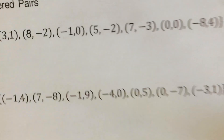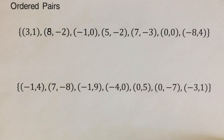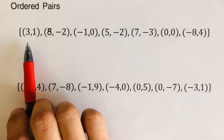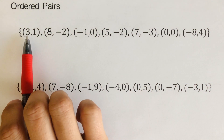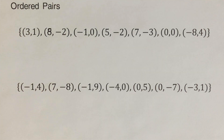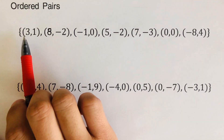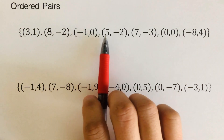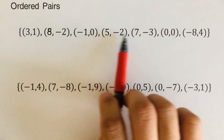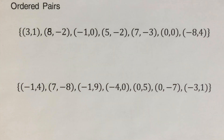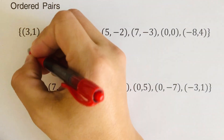Now let's look at ordered pairs. I'll take the first one as an example. To determine if this is a function, we look at the x values. Remember, for every x there should only be one unique y value. Let's see if x is repeated and paired up differently. x is not repeated here, so x is not paired up with two values of y. That means this is a function.